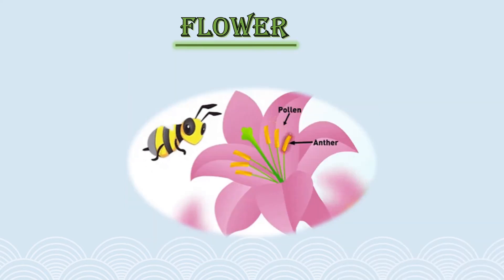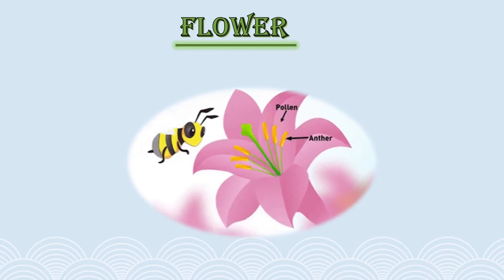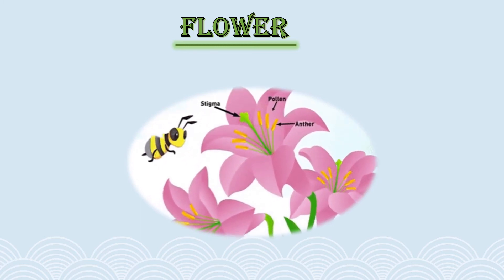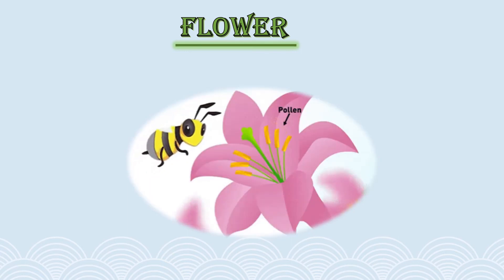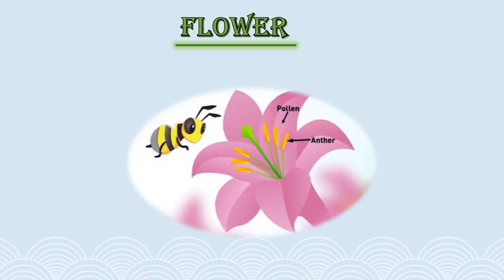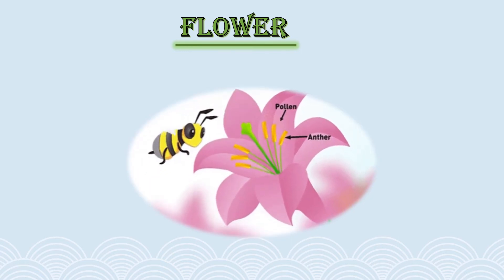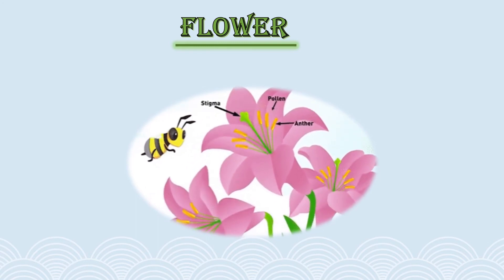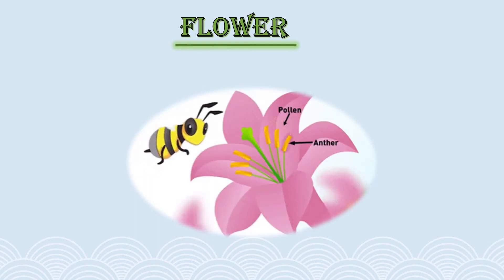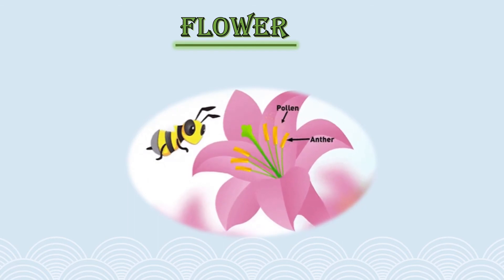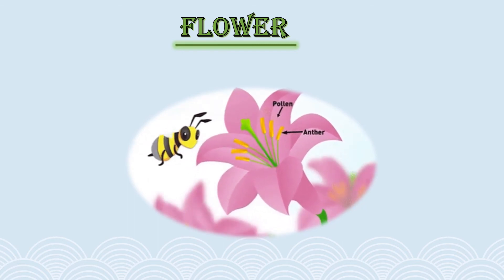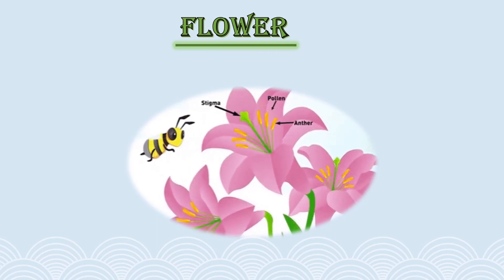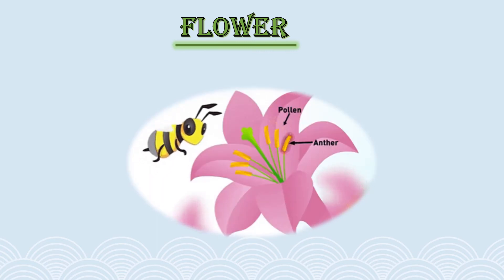Before we understand the importance of flower, let's take a close look at three main parts of a flower: stigma, pollen, and anther. Pollen grains are found on the anther and are transferred from one flower to another for the reproduction of the plant. The stigma is where the pollen grains are collected for reproduction.